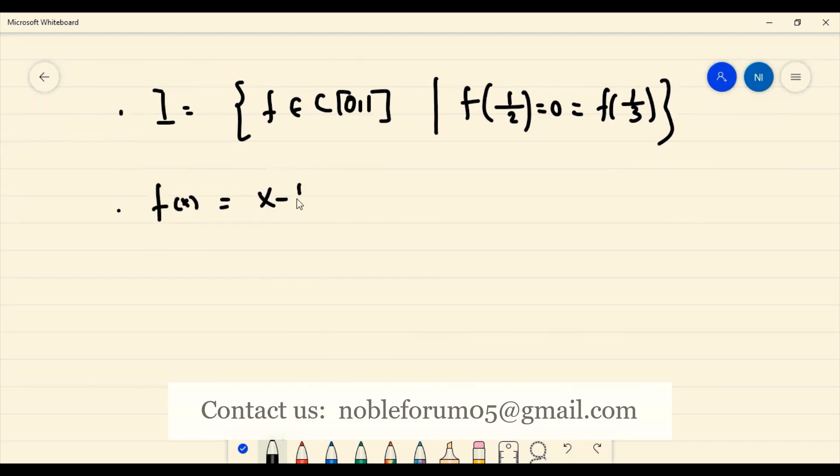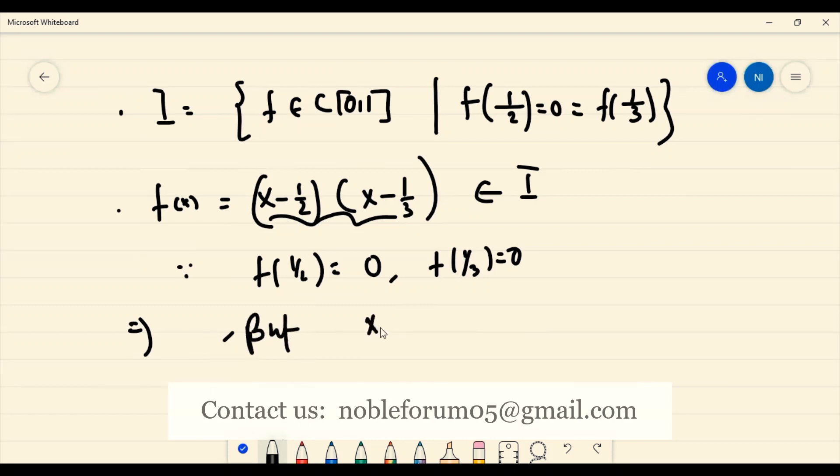If I take the function f(x) = (x - 1/2)(x - 1/3), look at this: this belongs to I because f(1/2) = 0 and f(1/3) = 0. This implies this product belongs to the ideal. But x - 1/2 does not belong to I. So what I have done is formed this collection of functions from C[0,1] which has this property, and this is well defined.